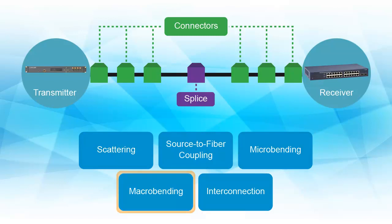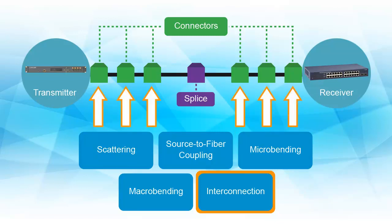Macro-bending loss is dependent on the installation environment, and the interconnection loss depends on the number of connections in the link. When these loss contributors are summed, the total link loss is a function of length and the number of connections. Hence, different fiber designs will optimize attenuation for different network configurations.